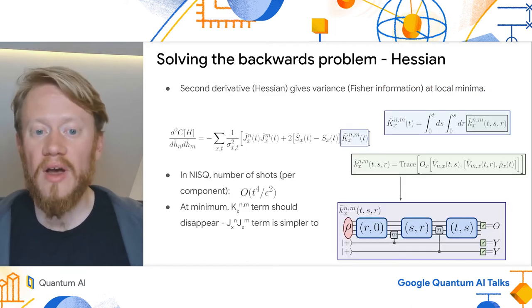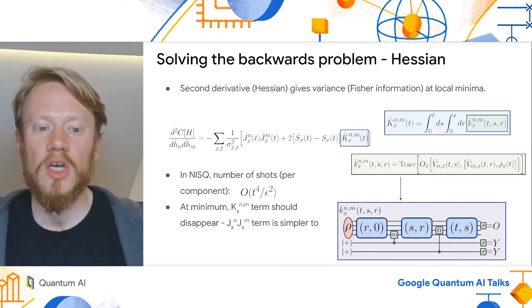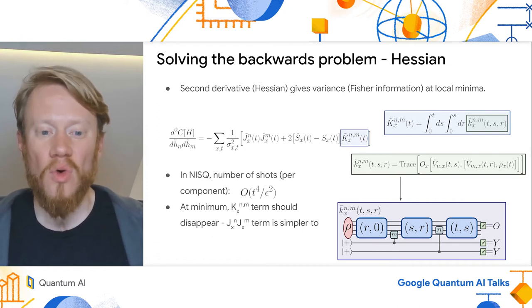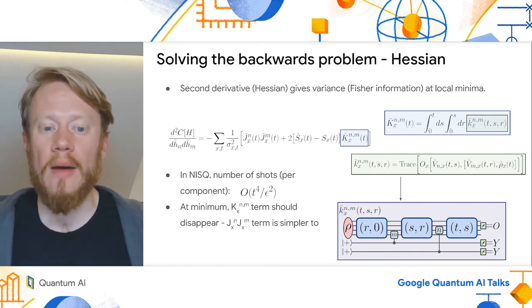Now, in order to quantify how much we can learn about our system, it is useful to be able to access the Fisher information of our problem. The Kramer-Rao theorem uses this to bound the variance of any unbiased estimator of our parameters.